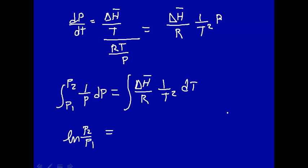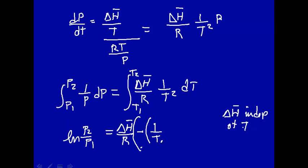So this is the natural log of P2 over P1. That's equal to, let's assume delta H is independent of temperature. So we pull that out of the integral, delta H over R. And if we integrate this with respect to temperature, we're going from T1 to T2. That's minus, multiply minus, 1 over T, 1 over T2 minus 1 over T1.